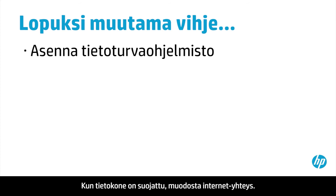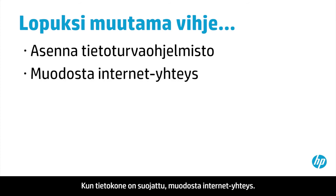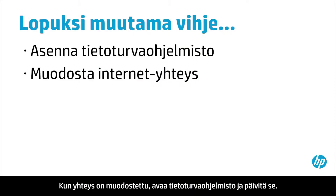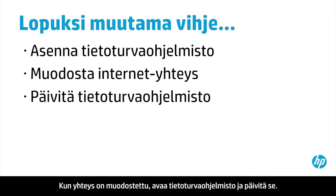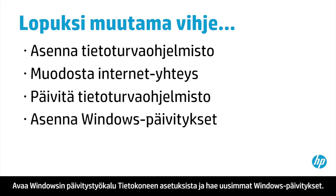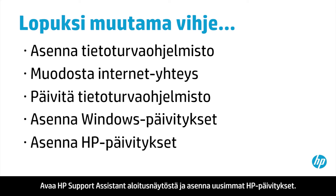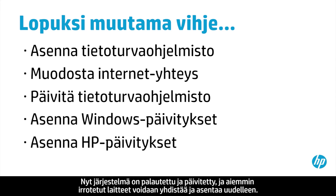Once your computer is secure, connect to the internet. Do this before installing other software in order to get the latest updates to your system. After connecting, open your security software and get the latest updates, especially updates to virus definitions. Open the Windows Update tool in PC settings to get the latest updates for Windows. Open HP Support Assistant on the Start screen to install the latest important updates from HP. Now that your system has been recovered and updated, you can reconnect and install devices that were unplugged previously.